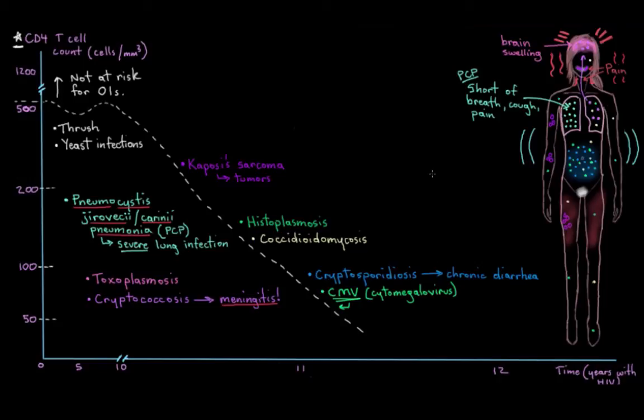So the last one I'll talk about happens if your CD4 cell count is less than 50 cells per cubic millimeter of blood. And this one's called Mycobacterium avium complex, or MAC. And this bacteria, similar to all the other bacteria and viruses and fungi that I've talked about so far, they're all present in many different places. Soil, water, on trees, really many places in the environment. But again, they don't cause any problems in people with healthy immune systems. We just fight them off.